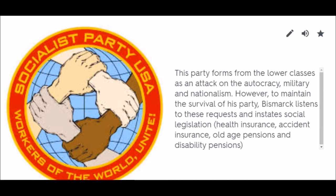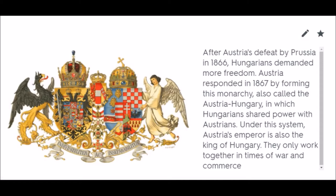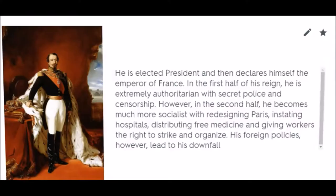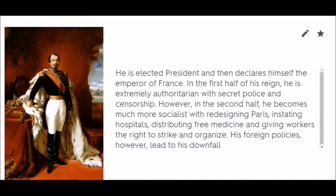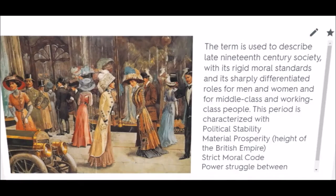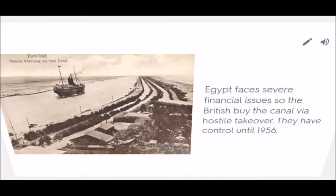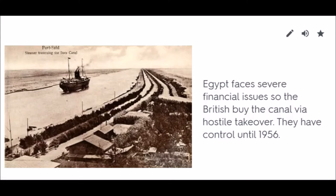Dual Monarchy. Napoleon III. The Third Republic. Dreyfus Affair. The Victorian Age. Benjamin Disraeli. Suez Canal: Egypt faces severe financial issues so the British buy the canal via hostile takeover. They have control until 1956.